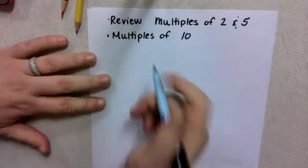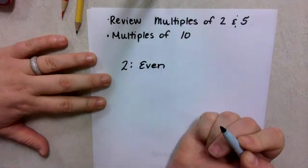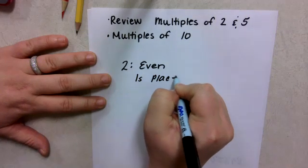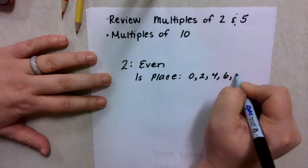What do we remember about multiples of 2? They're always even. And for them to be even, that means that in the ones place, they always have a 0, 2, 4, 6, or 8.